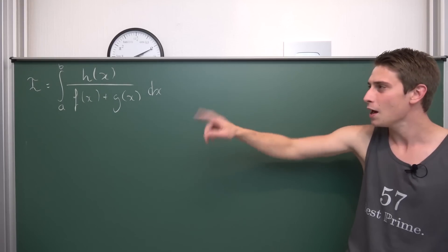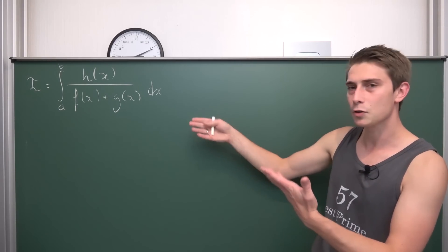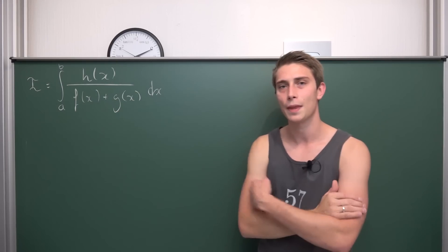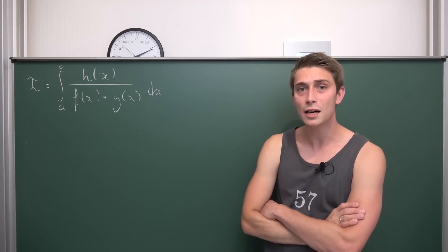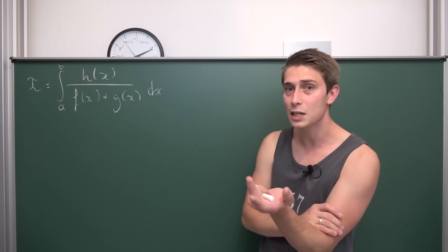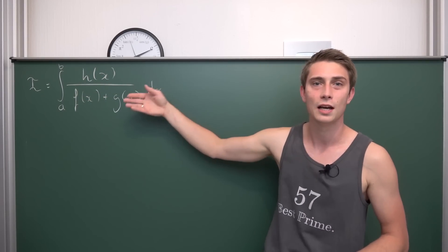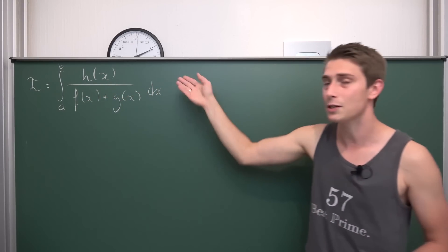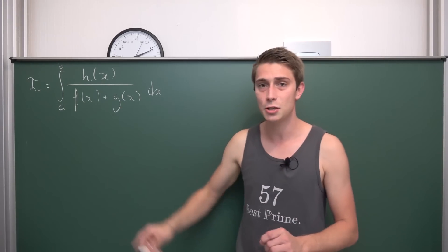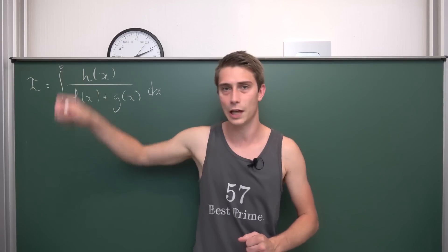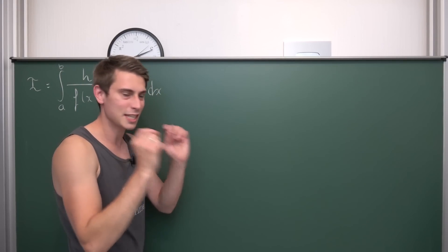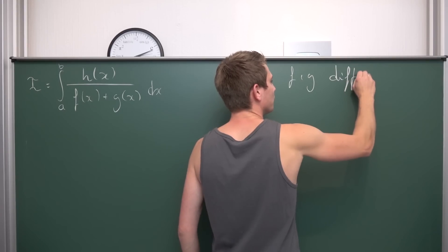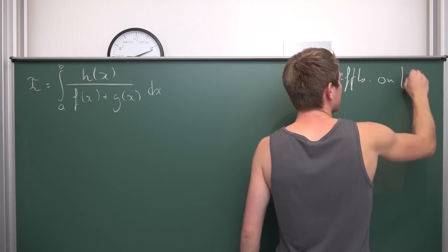Now we are going to start. At first I would like to place a few conditions on these functions F, G and H. We are basically going to deal later with an integral of this kind, which is a quotient — could be polynomials maybe, or maybe other transcendental functions. So at first I want F and G to be differentiable on the interval AB. This is definitely a condition that needs to apply.